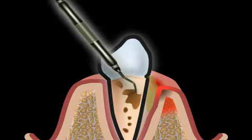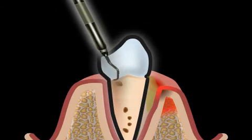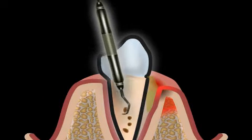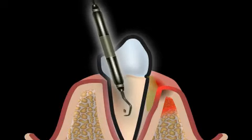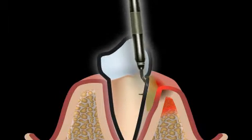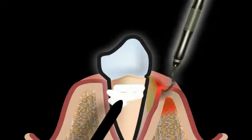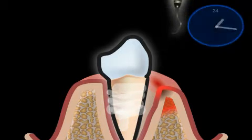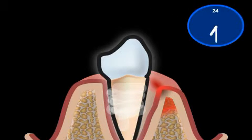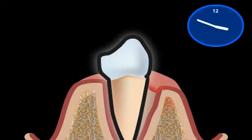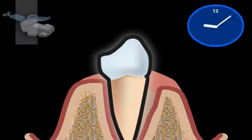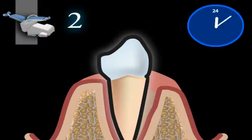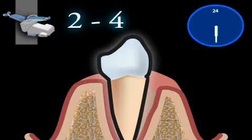During this initial cleaning phase, concretions and pocket tissue are removed. Furthermore, rough root surfaces are smoothed. This is done painlessly for the patient by means of a local anesthetic ointment. Such thorough cleaning can be very time-consuming because all surfaces of the roots must be cleaned. So this so-called initial treatment usually takes place in two or three sessions.